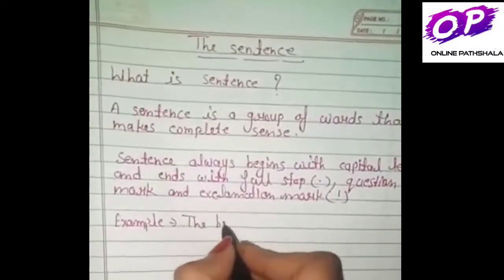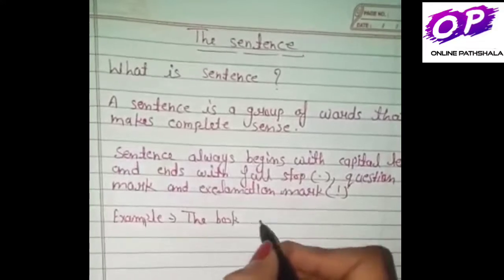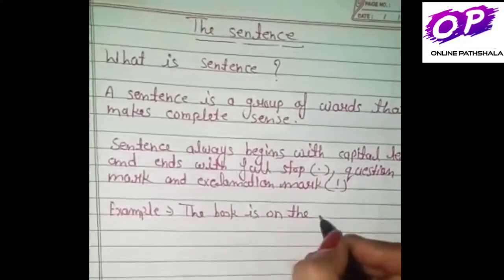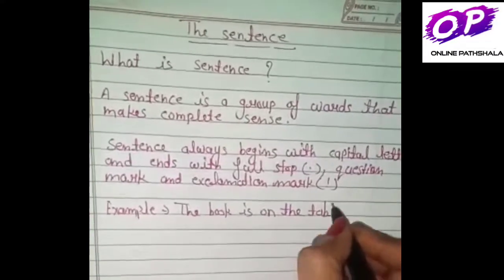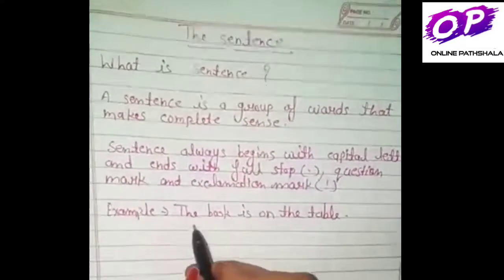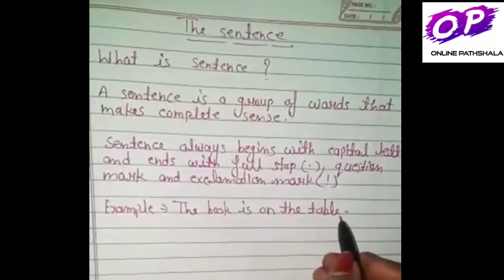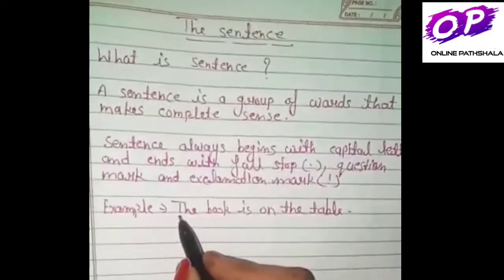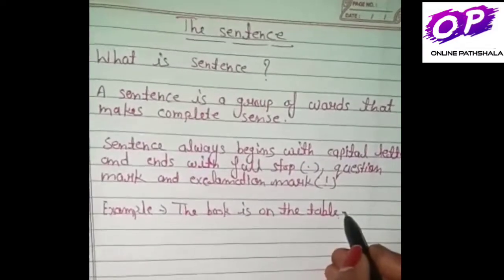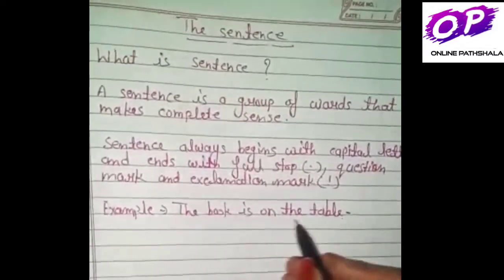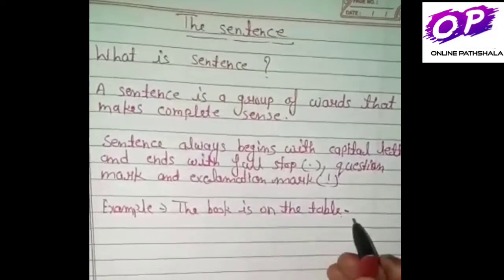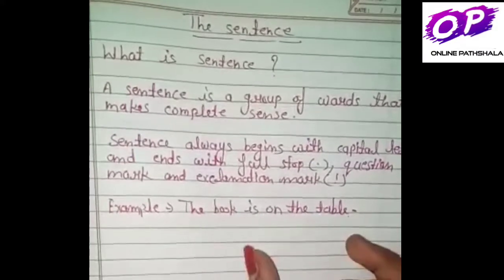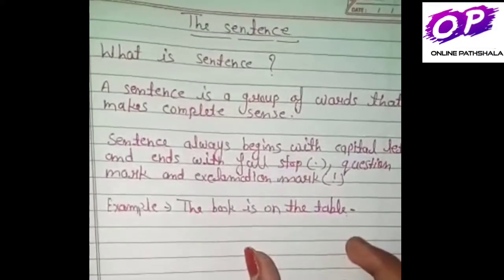The book is on the table. यहाँ पर देखेंगे बच्चों — 'The book is on the table.' इस में first letter capital है, और last में full stop लगाया है, और इस sentence का एक complete sense निकल रहा है, इसलिए इसे हम sentence कहेंगे।